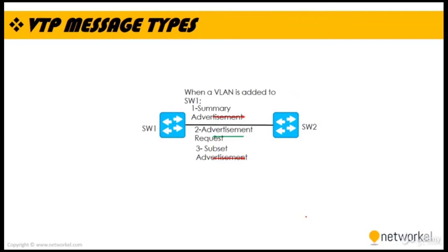Let's go ahead with the VTP message types. We have three VTP message types: Summary Advertisement, Advertisement Request, and Subset Advertisement. Summary Advertisement is sent by the VTP server in five-minute intervals to its adjacent switches and includes the VTP domain name and configuration revision number. Advertisement Request is sent if a Summary Advertisement includes a higher configuration number than the current value. Subset Advertisement holds the VLAN information.